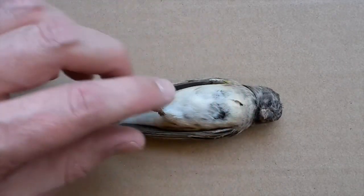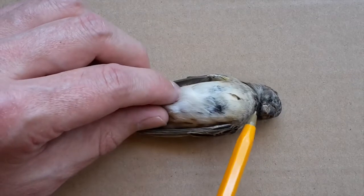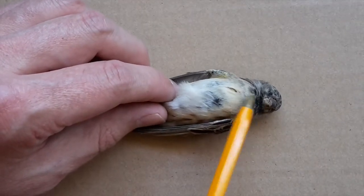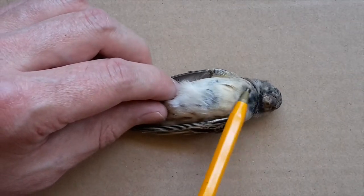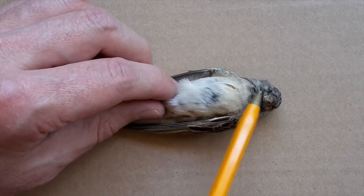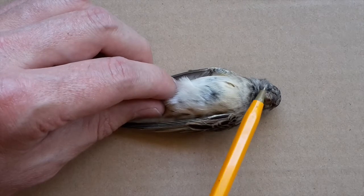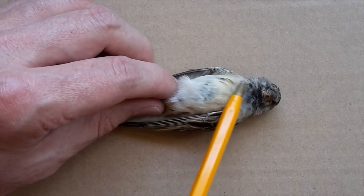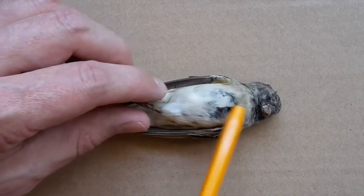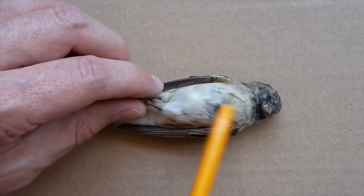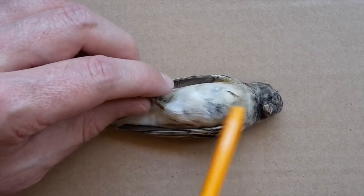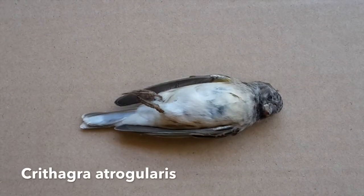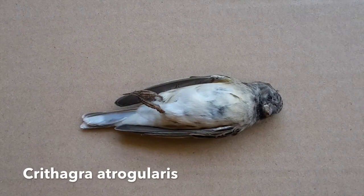It's called a black-throated canary because of this little bit of black on the chin. It's more pronounced in males than females, and more pronounced in adults than juveniles, but very variable. That's also reflected in the scientific name, Crithagra atrogularis.